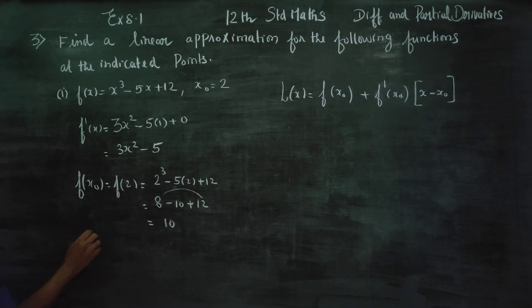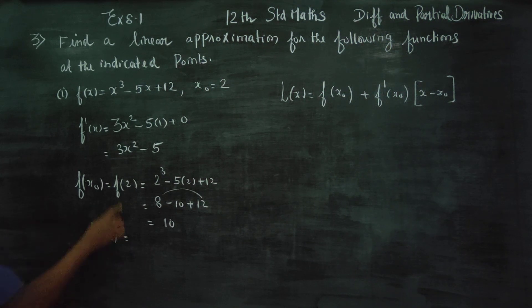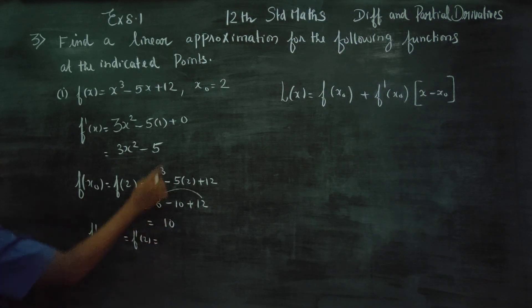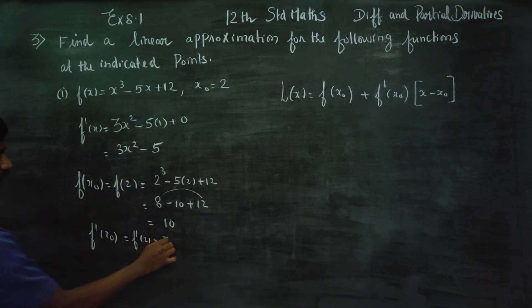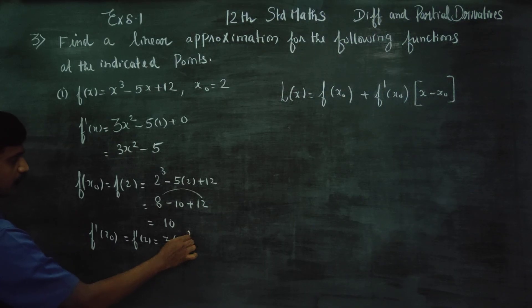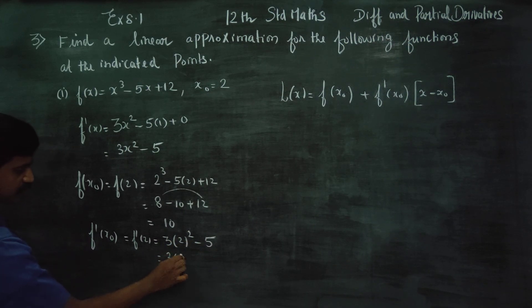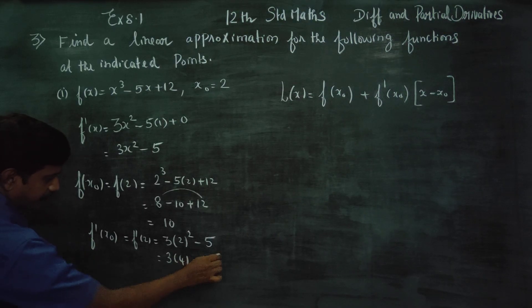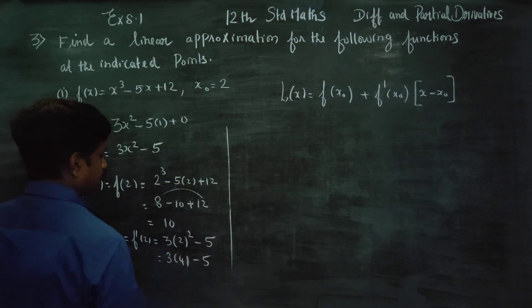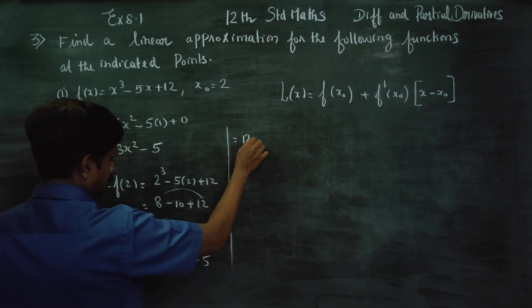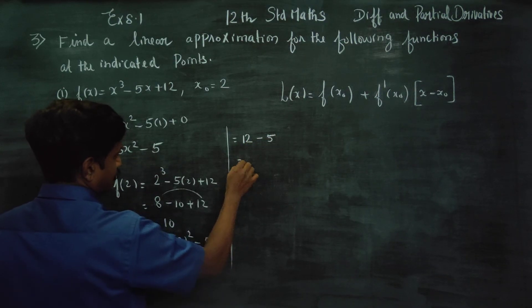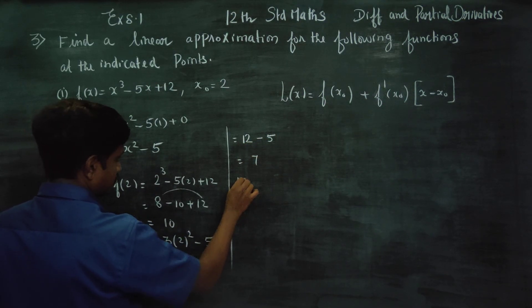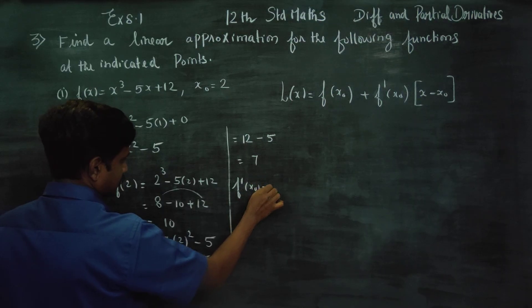Next, find f'(x₀) = f'(2). Substituting x = 2 into f'(x) = 3x² - 5: we get 3 × 2² - 5 = 3 × 4 - 5 = 12 - 5 = 7. Therefore f'(x₀) = 7.